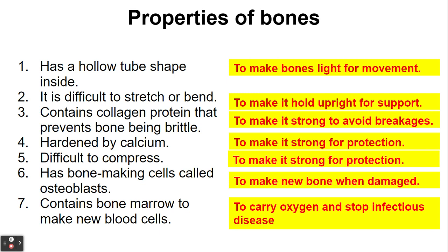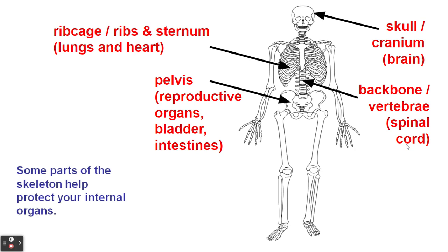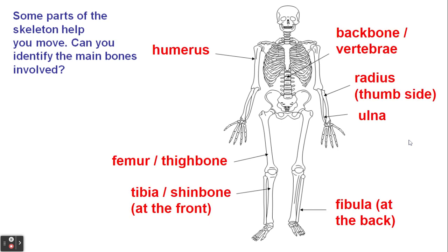You'll learn more about blood cells later on in the course, but red blood cells carry oxygen, and white blood cells stop infectious diseases, so making new ones of those is really important. Some parts of the skeleton protect your internal organs. The skull protects the brain, and the backbone protects soft tissue called the spinal cord, which is made up of nerves. The rib cage protects the lungs and heart, and the pelvis protects the reproductive organs, the bladder, and the intestines.